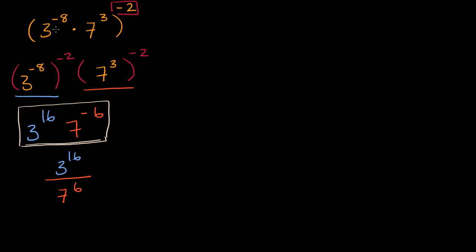There are other ways that you could have tackled this. You could have said that this original thing right over here is the same thing as — three to the negative eight is the same thing as one over three to the eighth — so you could have said this is the same thing as seven to the third over three to the eighth, and then you're raising that to the negative two, in which case you would raise the numerator to the negative two and the denominator to negative two. But you would have gotten to the exact same place.